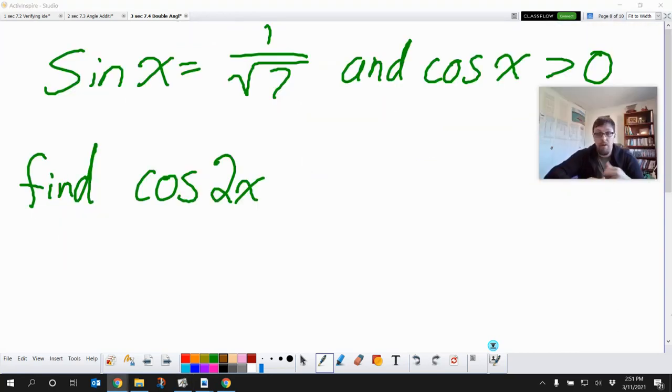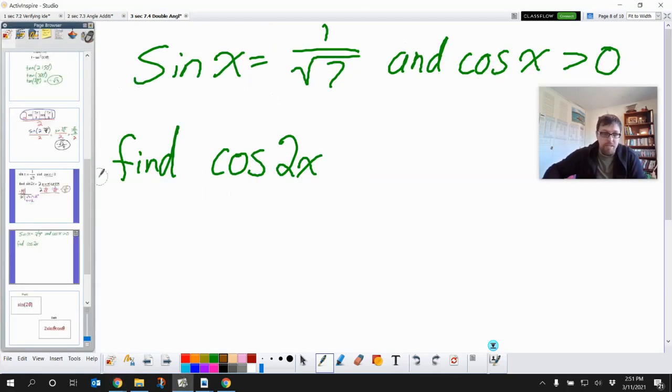Neat. All right, let's try just one more of those things. So we've got sine is 1 over square root of 7. And cosine is greater than zero. We want to figure out what the cosine of 2x equals. So, if only I had something that equaled the cosine of 2 angle. Okay, well, let's take a look.